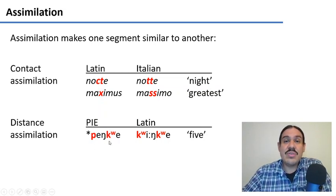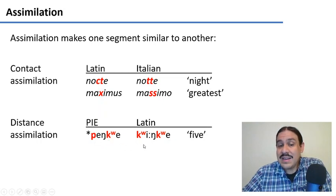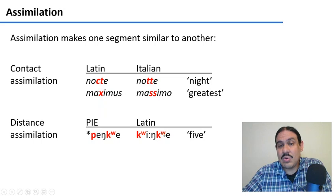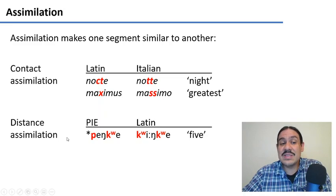We can also have assimilation at a distance — for example, assimilation from one onset to another. Here we have the Proto-Indo-European word for five, 'penque'. In Latin, we have 'quinque' for number five. What probably happened is that the onset of the second syllable, 'qua', assimilated the onset of the first syllable and copied itself in there. So now we have two Q's instead of the original P — a case of assimilation where one phoneme influences another.